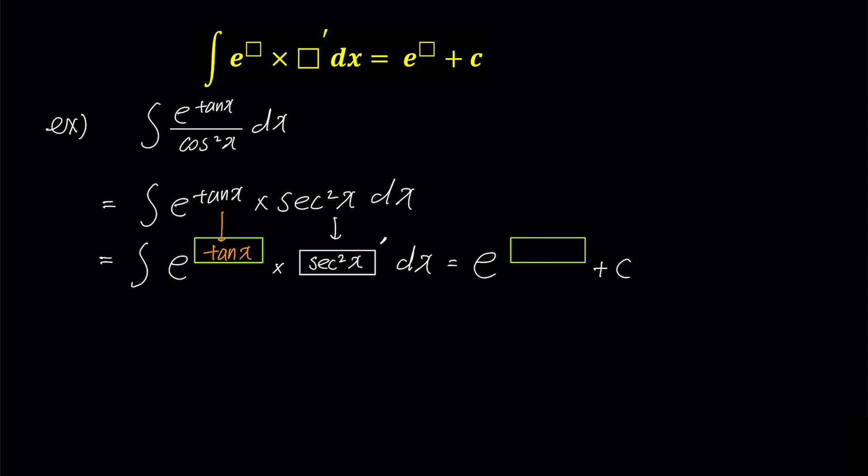Now the answer is complete. If you put tan x in the right green box as well, the answer becomes e to the power of tan x plus c. We found the answer in just two lines, without u-substitution.